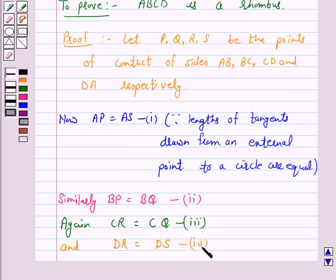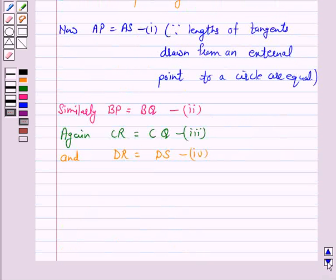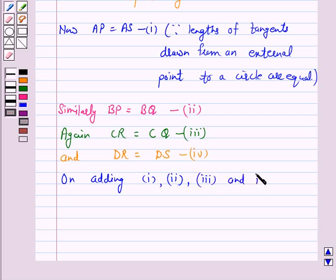And this as number 4. Now, on adding 1, 2, 3 and 4, we get